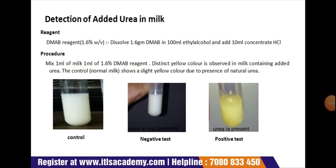Next test is the detection of urea in milk. For this we require a DMAB reagent of 1.6 percent weight by volume. To prepare it, dissolve 1.6 gram of DMAB in 100 ml of ethyl alcohol and 10 ml of concentrated HCl. The procedure: mix 1 ml of milk and 1 ml of 1.6 percent DMAB reagent.